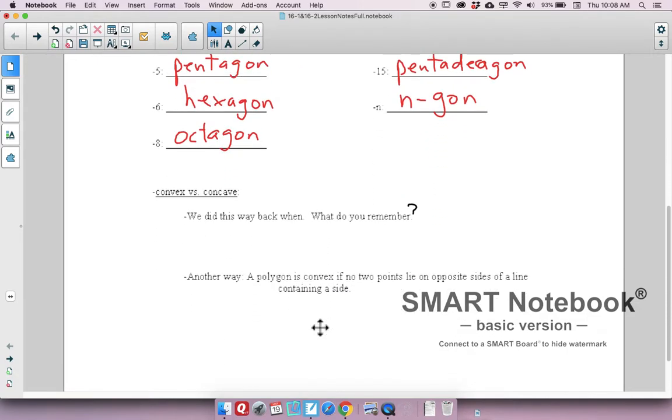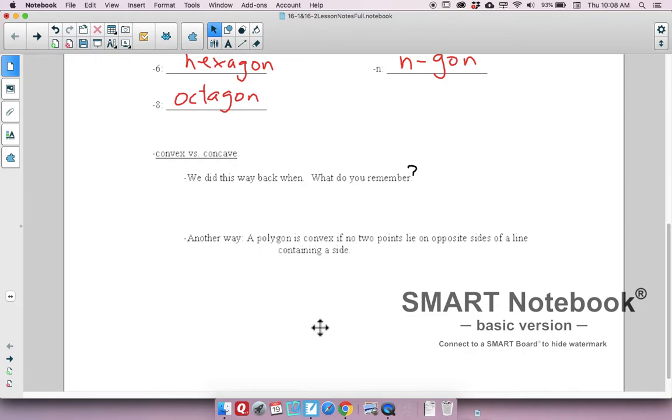Convex versus concave. Remember when we did this way back when, and basically we said that you couldn't have two points that are connected by a segment that leave the set? If it does, then it's called concave. If it doesn't, then it's convex. We're going to kind of do this another way that involves polygons. A polygon is convex if no two points lie on opposite sides of a line containing a side. So you can't have points in your polygon that lie on opposite sides of a line that contains a side, and that has to work for every line that contains a side of the polygon.